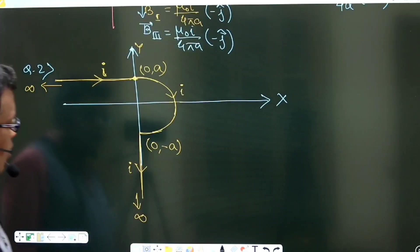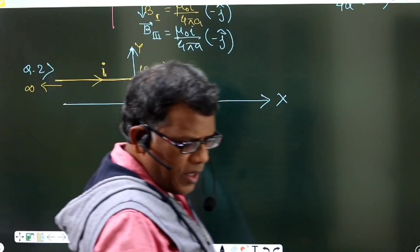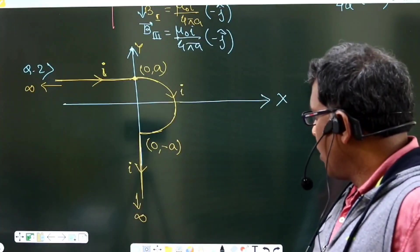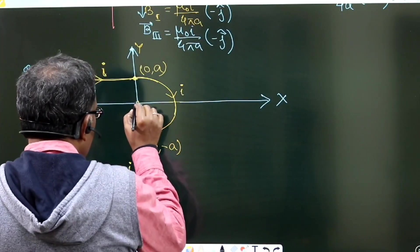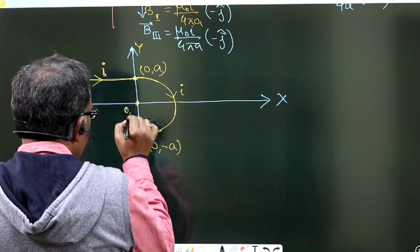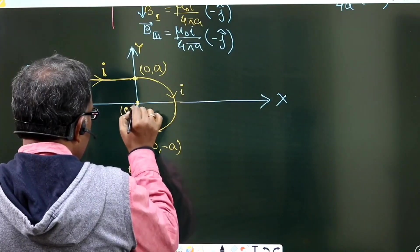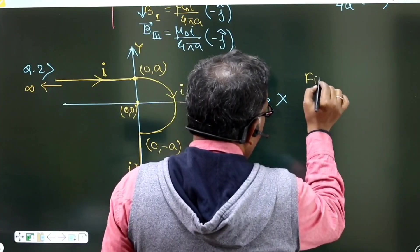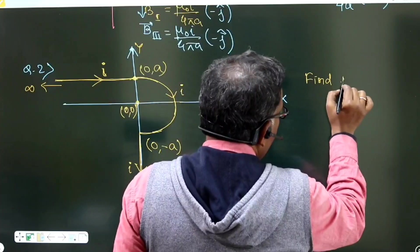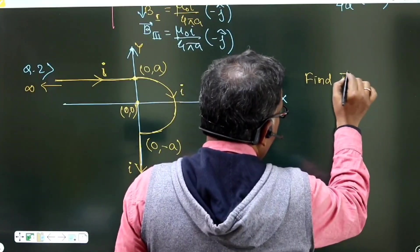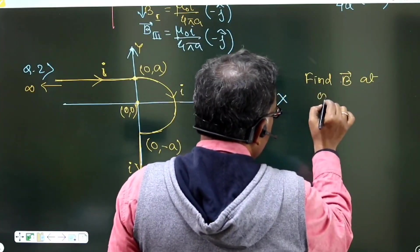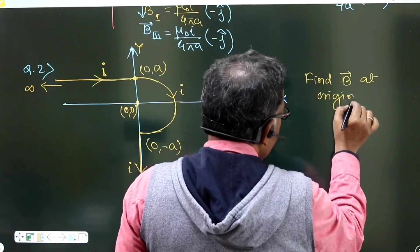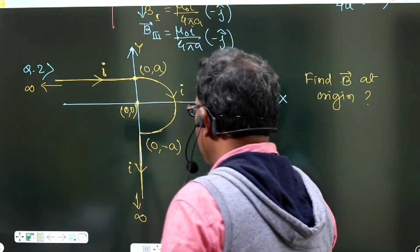This is the total result for two straight sections along with the semicircular part. The required point is the center of the semicircle, which is the origin. So the task is: find the magnetic field vector B at the origin for this arrangement.